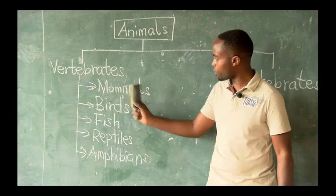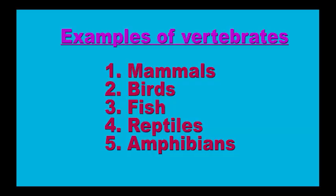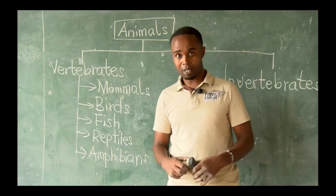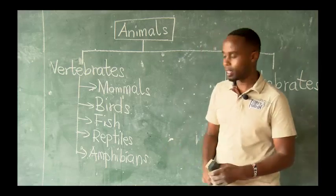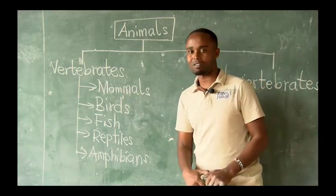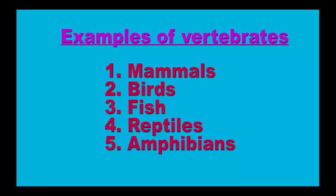So the first group are known as mammals. Then we have birds. We have fish. Reptiles. And amphibians. Those are the five groups of vertebrates, and remember we have said that vertebrates are animals with a backbone. Pupils, I want you to write down these examples of vertebrates. Write them down and make sure you use good handwriting.